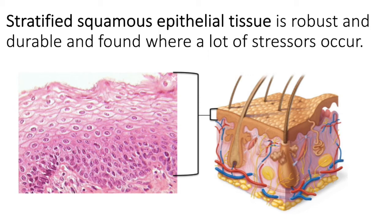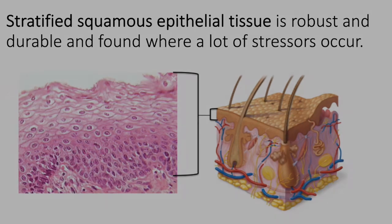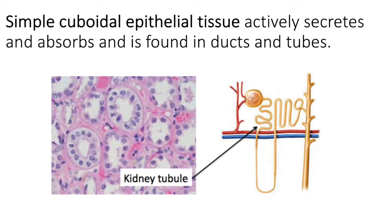Simple cuboidal epithelial tissue always forms these rings. When we see it, we'll always see a white ring in the middle, and it's around that ring that those cuboidal cells form some sort of tube. They're inside your body, forming these delicate tubes. For example, the kidney tubule is a very long convoluted tube in your kidneys — the site of reabsorption and secretion of molecules in the formation of urine.